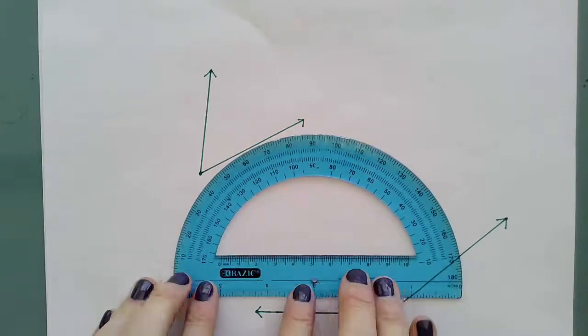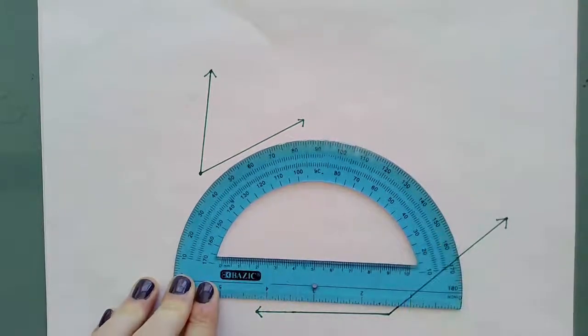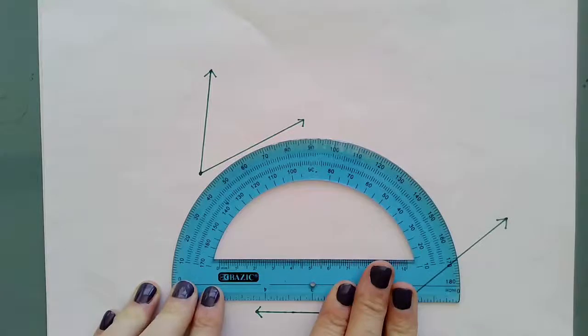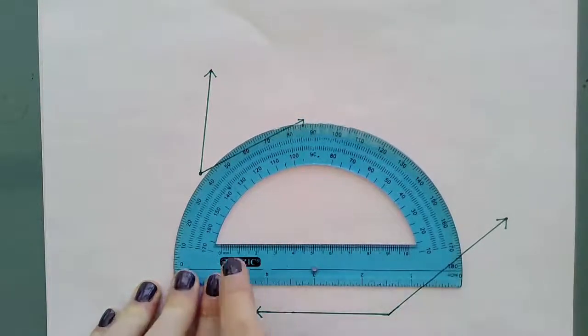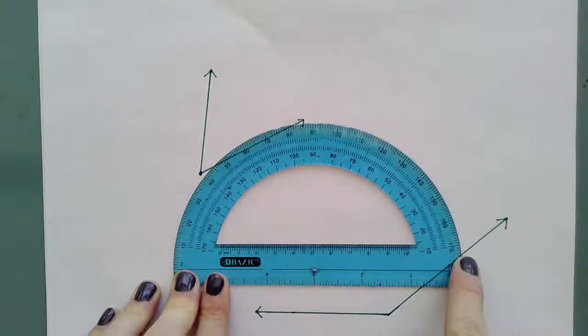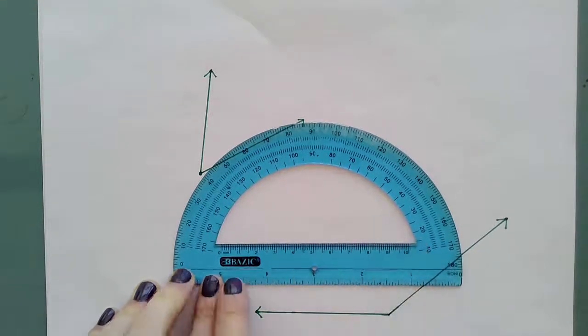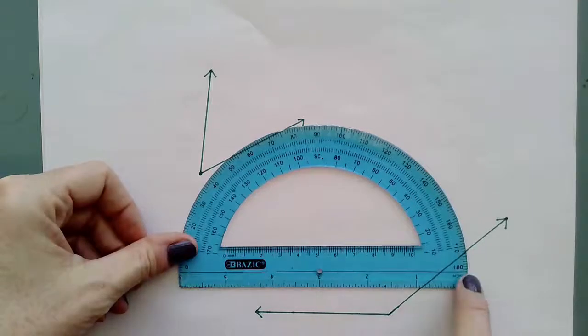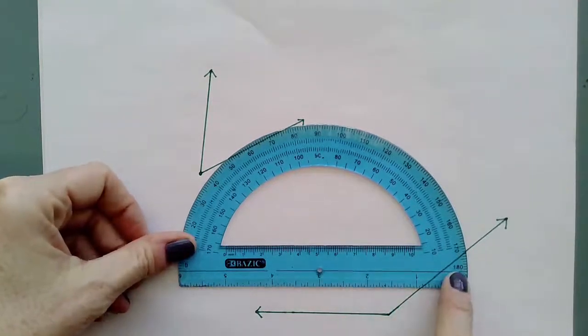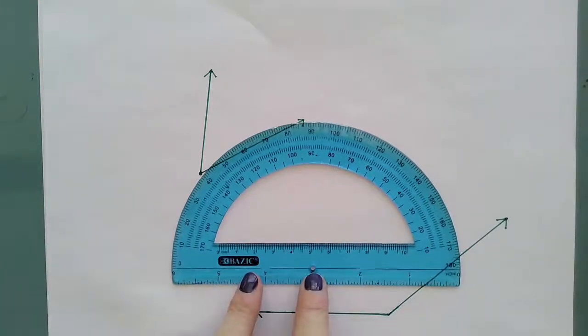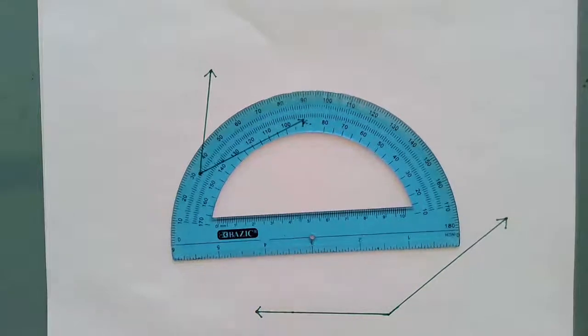Now let's take a look at a protractor and this is what we're going to use to measure and draw our angles. You'll notice here there is an outer scale and there is an inner scale. This line here is the zero edge and then we have our center mark and it's a little hole there in the protractor. We're going to use that to help us.